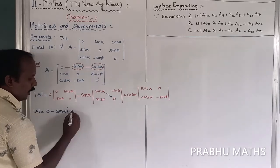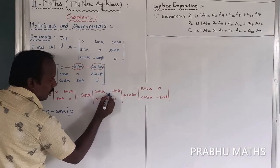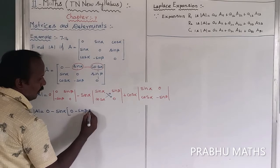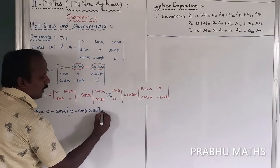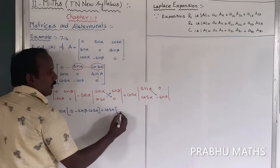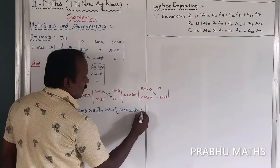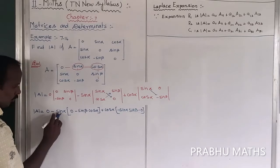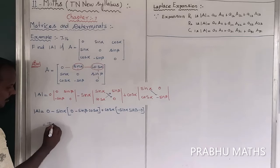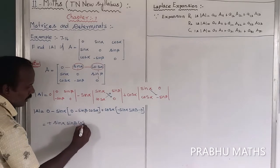Sin α times zero equals zero. Next, the cross multiplication for the second term gives minus sin β times cos α. Then plus cos α into the diagonal multiplication: minus sin α times sin β, and the minus term goes to zero. Inside, minus times minus gives plus, so we get plus sin α sin β cos α.